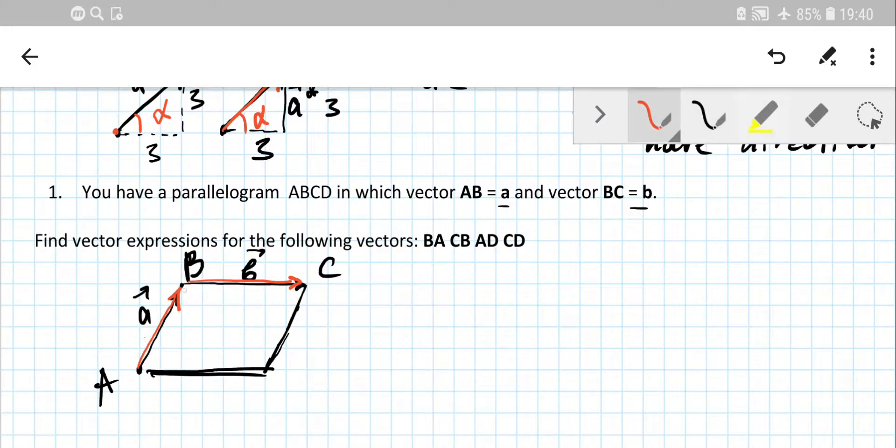So where is the vector BA? BA is the vector with the same length as AB, because if you take the length for AB, the magnitude is going to be the same as for BA. So what's the difference? The difference is that BA is the opposite vector to AB.